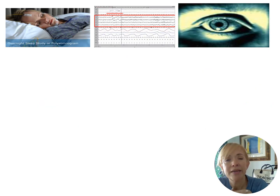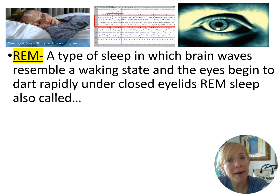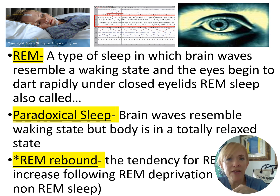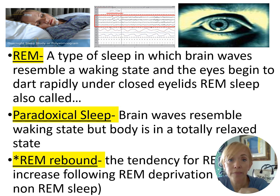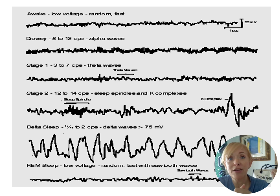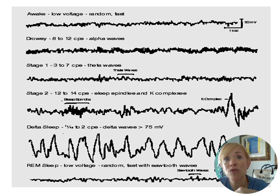REM is also called paradoxical sleep because it's a paradox — your mind and brain are highly active, yet your body is quiet and still. REM rebound occurs when you're sleep-deprived: your brain enters REM longer and sooner. EEG images show that brain activity during REM sleep is nearly identical to brain activity while awake.